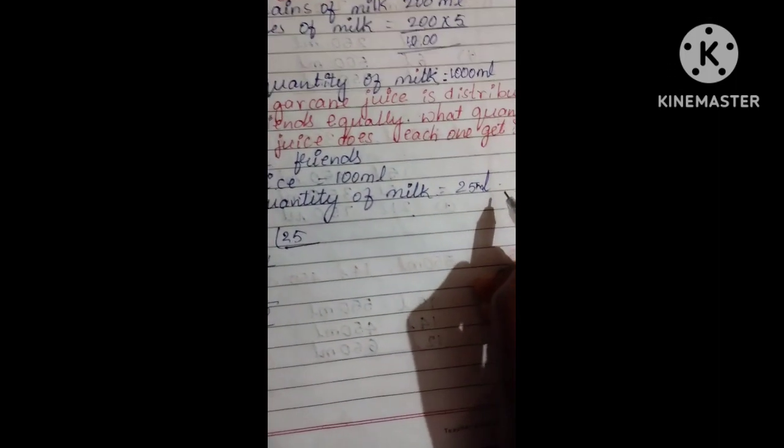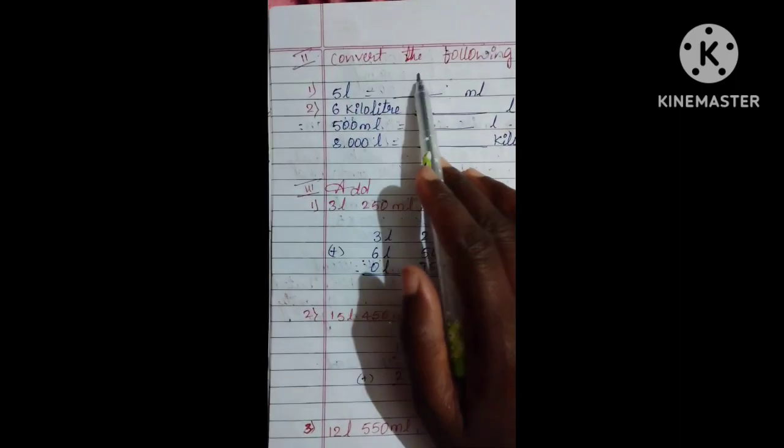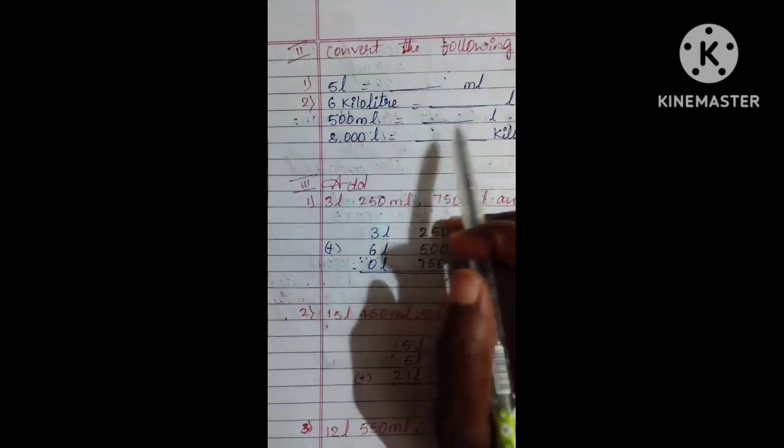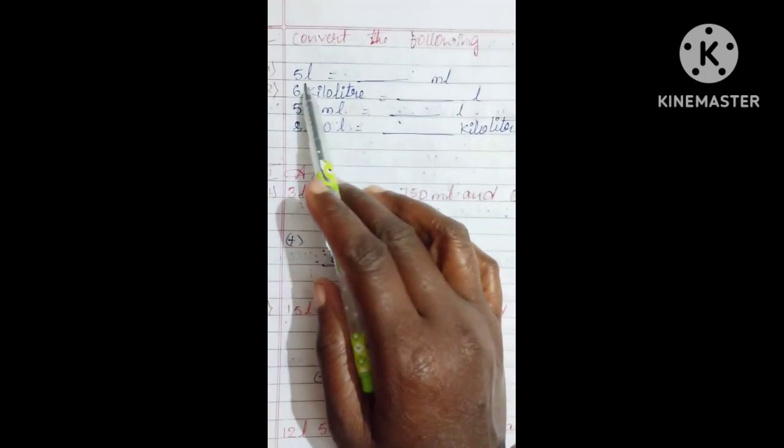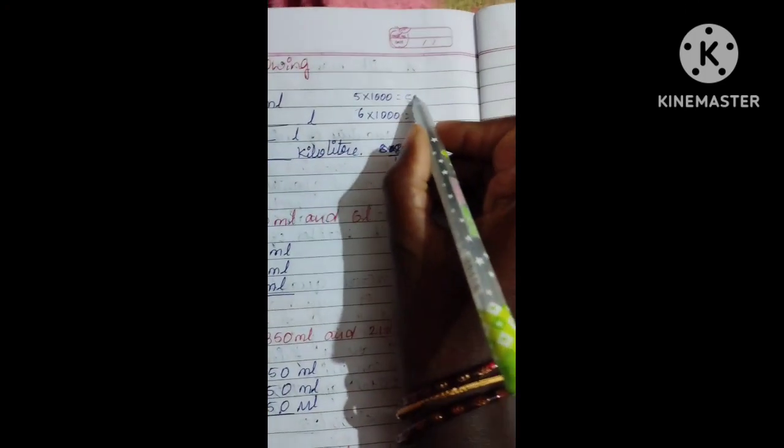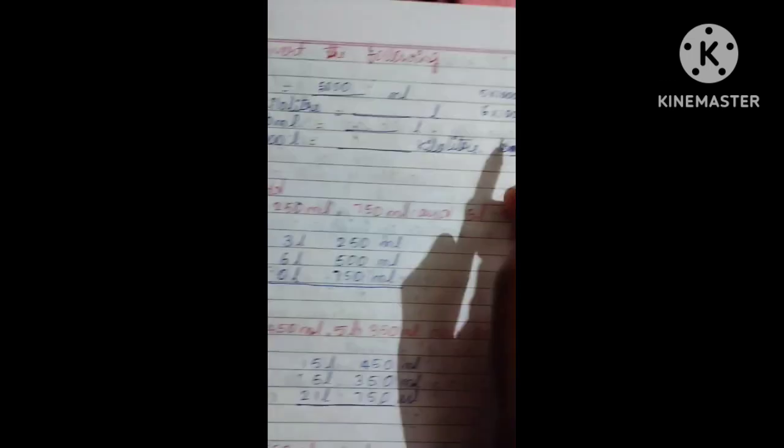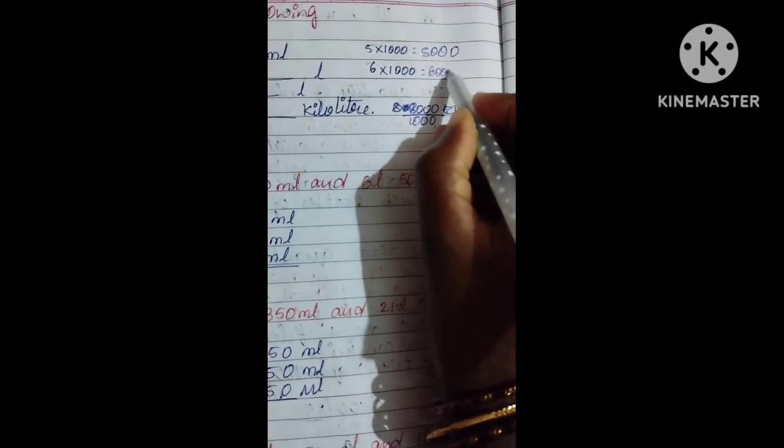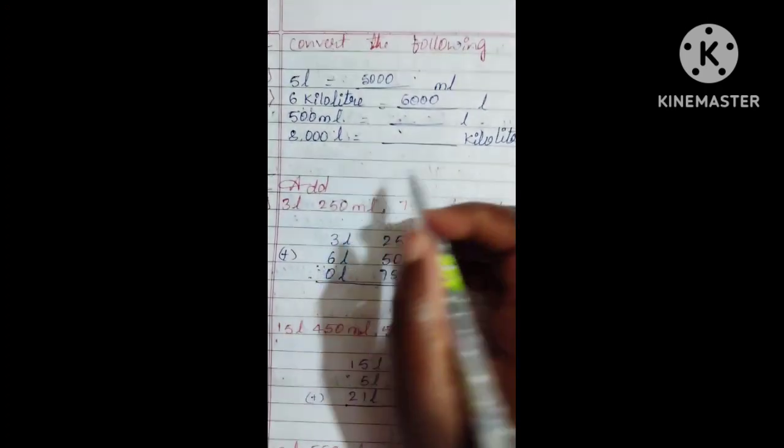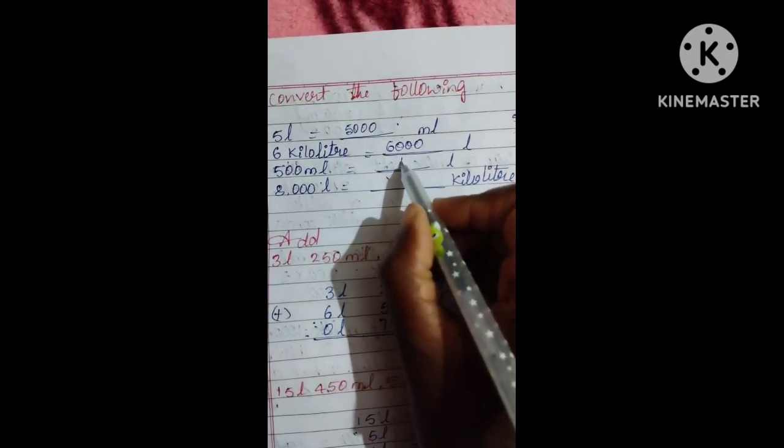Next we have second main: convert the following. We already know 1 liter equals 1000 milliliters. 5 liters equals 5 into 1000, which is 5000 milliliters. 6 kiloliters equals 6 into 1000, which is 6000 liters. Half liter equals 500 ml. 8000 liters equals how many kiloliters?